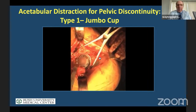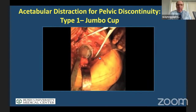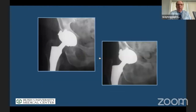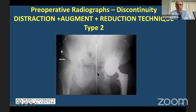Always put screws and cement in the liner. There's an example of one such case — you can see the discontinuity, a large cup, and healing at five years post-op. This would be a type one treatment of a discontinuity.